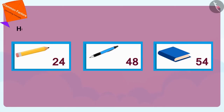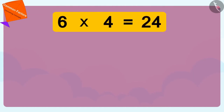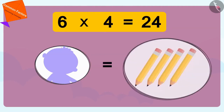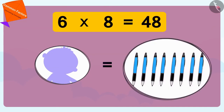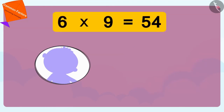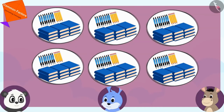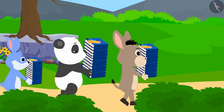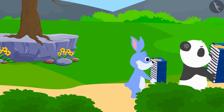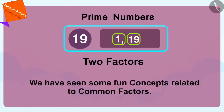Oh wow — if Golu adds five pencils to 19, there will be a total of 24 pencils. Here, the numbers 1, 2, 3 and 6 are the common factors of 24, 48 and 54, and 6 is their highest common factor. Therefore, they can distribute these things equally among six children. Each child gets 4 pencils (since 6×4=24), 8 pens (since 6×8=48) and 9 notebooks (since 6×9=54). In this way, Golu, Banni and Bolla formed six groups of all those items and excitedly went out to deliver them to the needy children of the village.